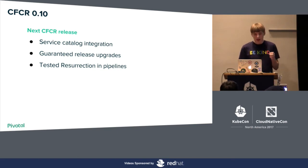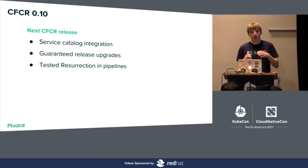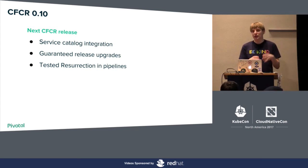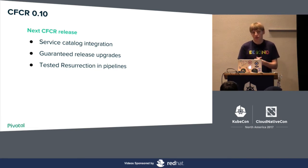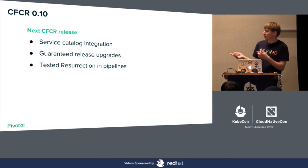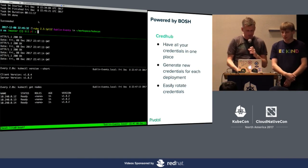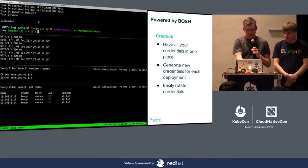In our pipeline we deploy CFCR during each run and verify everything deploys successfully. We also guarantee release upgrades — tested in the pipeline, so we can upgrade from 0.9 to 0.10 with no problems. And VM resurrection is tested in the pipeline as well. BOSH does resurrection for everyone, but we want to test it on every commit and verify it in misconfigured cluster scenarios. Our Kubernetes upgrade is now completed — the application has continued running throughout, and we're now at version 1.8.2.